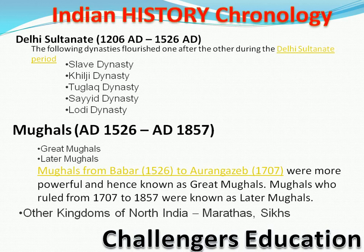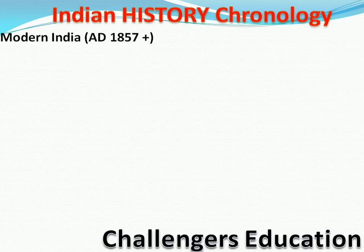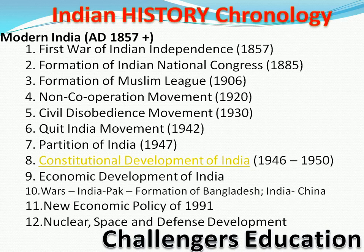Jaise hi haara 1857 khatam hota hai — yahan pe Shivaji aur British rulers ke saath — uske baad haara Modern India shuru ho jaata hai. Hum padhenge: Indian National Congress ki foundation 1885, Muslim League ki foundation 1906, Non-Cooperation Movement 1920, Civil Disobedience Movement 1930, Quit India Movement 1942, Indian Independence 1947, aur Constitutional Development 1946-1950.